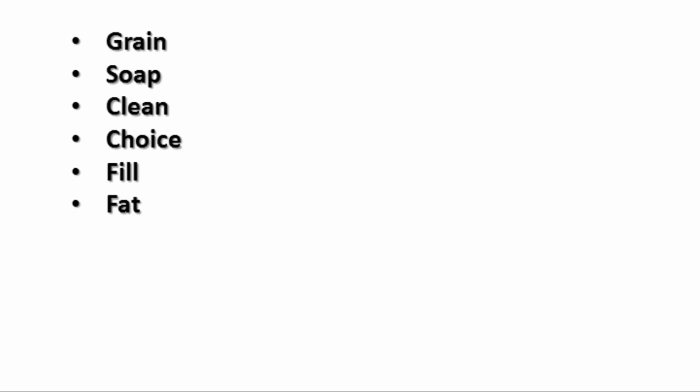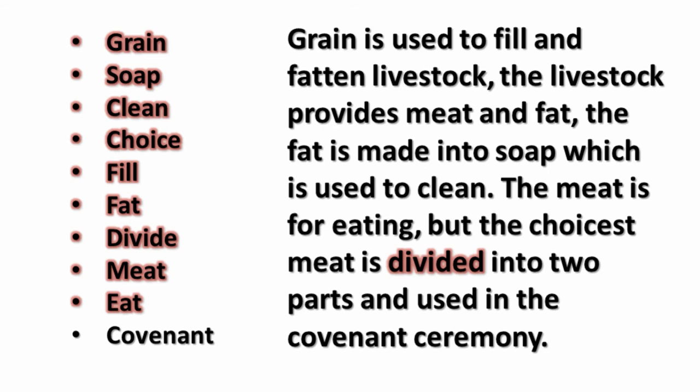What can we gather from all of these words? Grain is used to fill and fatten livestock. The livestock provide meat and fat. The fat is made into soap, which is used to clean. The meat is for eating, but the choicest meat is divided into two parts and used in the covenant ceremony.